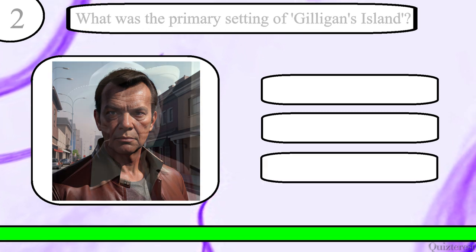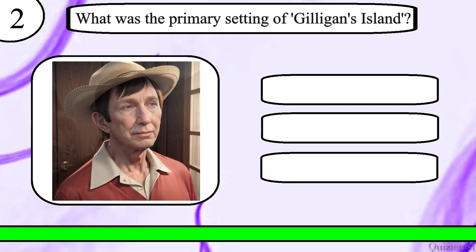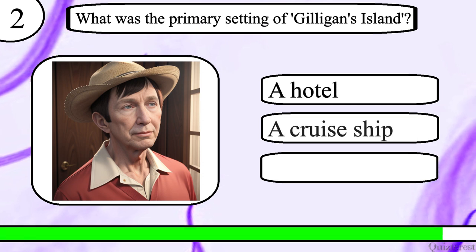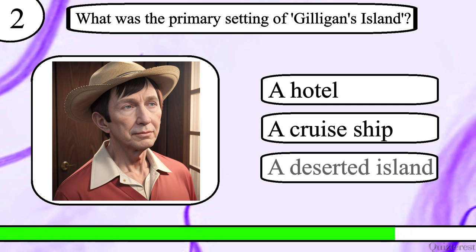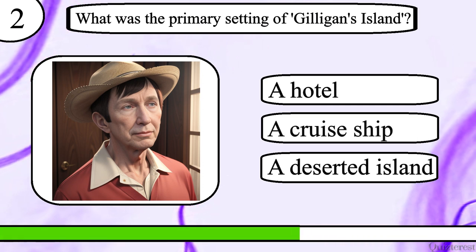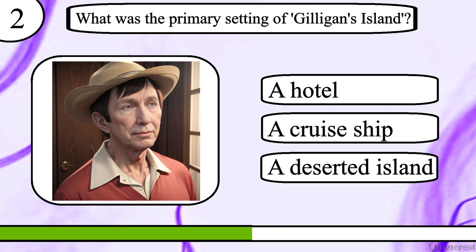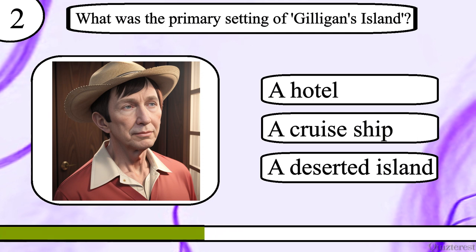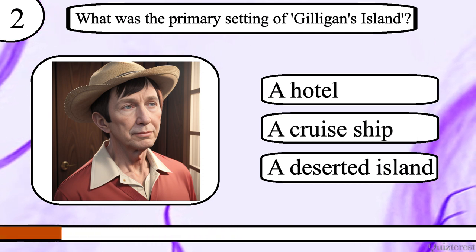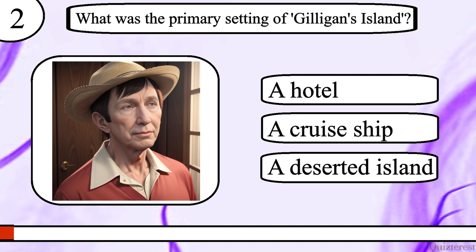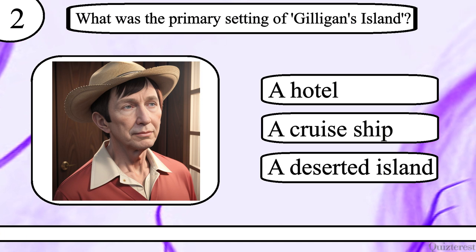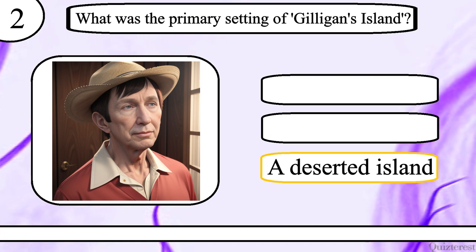Question 2. What was the primary setting of Gilligan's Island? A hotel, a cruise ship or a deserted island? The correct answer is a deserted island.